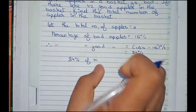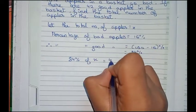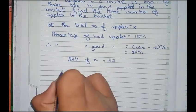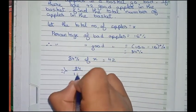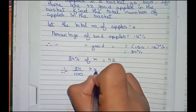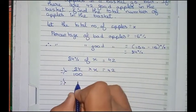That means 84% is the number of good apples and x is the total number of apples. So that equals to 42. Now I write 84, which we can write as 84 by 100, times x equals to 42.